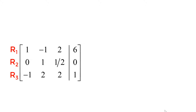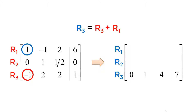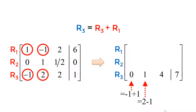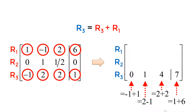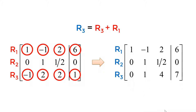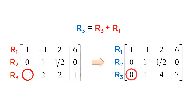Next step is to reduce my minus 1 to 0. I will use 1 in the first row, first column as a pivot point. Since I have minus 1 in the third row, I will add the first row to the third row element by element. My 0 comes from minus 1 plus 1, my 1 comes from 2 minus 1, my 4 comes from 2 plus 2, and my 7 comes from 1 plus 6. I keep all elements in the first two rows the same. You successfully made 0 in the third row, first column.